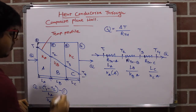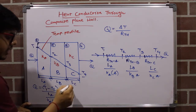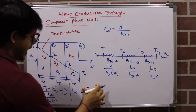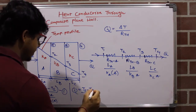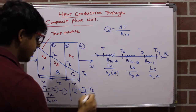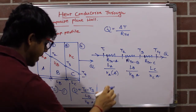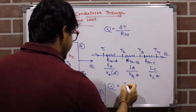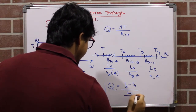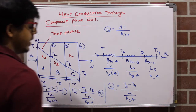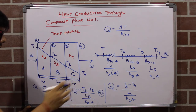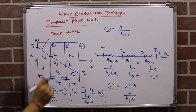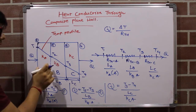For wall B: Q = (T2 − T3) / (Lb / (Kb·A)). This is Equation 2. For wall C: Q = (T3 − T4) / (Lc / (Kc·A)). This is Equation 3. In all three equations we write Q — the same Q — because in the series combination of plane walls the heat transfer rate remains the same for each wall and for the whole combination.